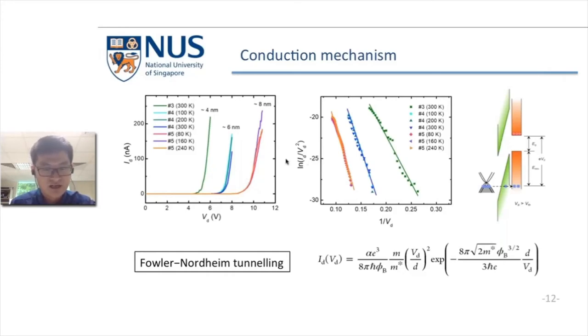Second, we found that in the high bias region, the IV curve can be fitted well by the Fowler-Nordheim tunneling function. From the fitting, we can extract the energy barrier of the holes, and the slope also depends on the thickness of the boron nitride. All this evidence verifies the proposed tunneling mechanism for this device.